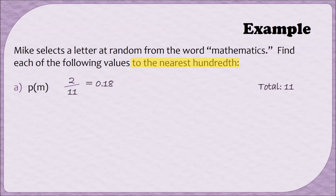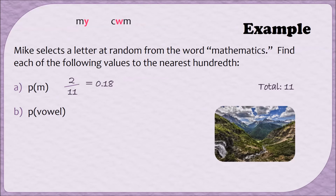Let's do another example. Part B asks for the probability that we'll find a vowel. For consistency and to avoid confusion, when we talk about vowels in this video series, we'll be discussing the five main vowels: A, E, I, O, and U. The sometime vowels like Y in the word 'my,' or W in the word 'cwm,' which means kind of like a valley, we're not going to count. So Y and W do not count as vowels.